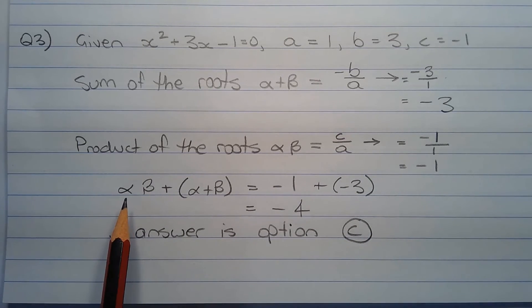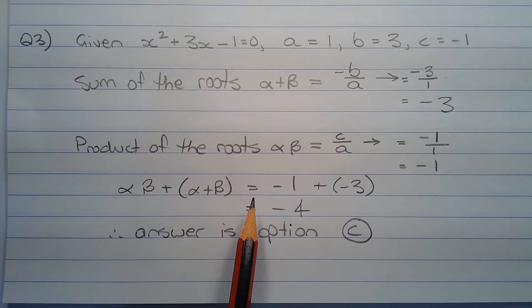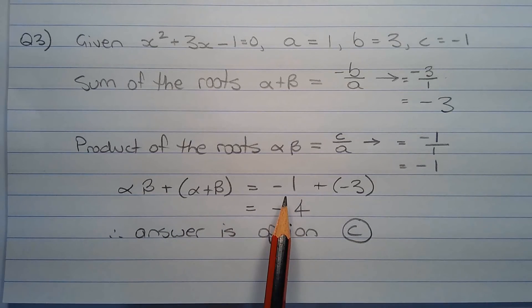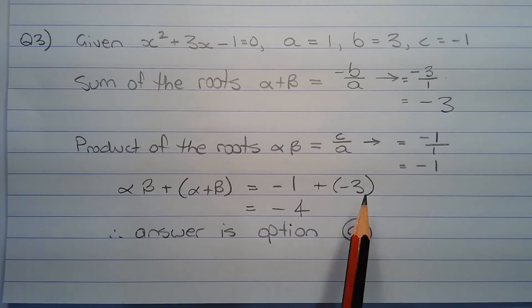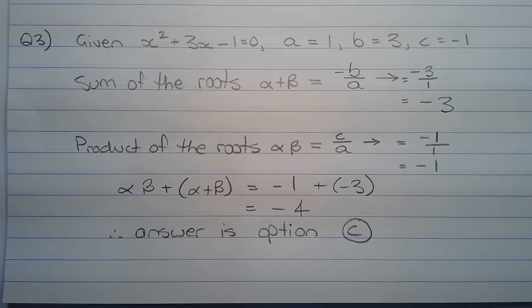Now alpha beta plus alpha plus beta equals negative 1 plus negative 3, which equals negative 4. Therefore the answer is option C.